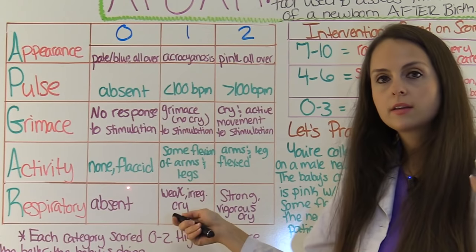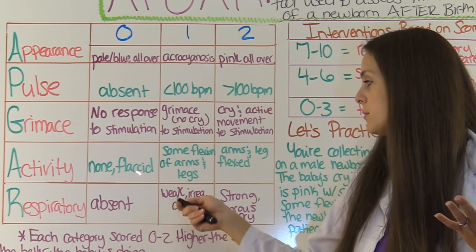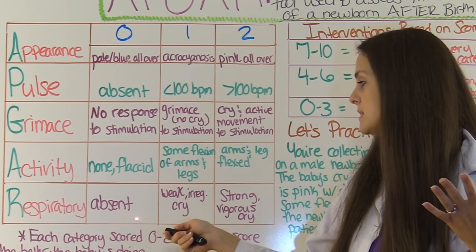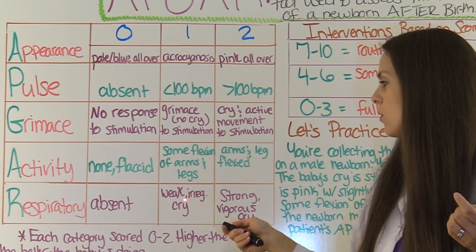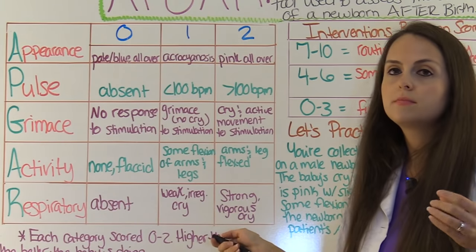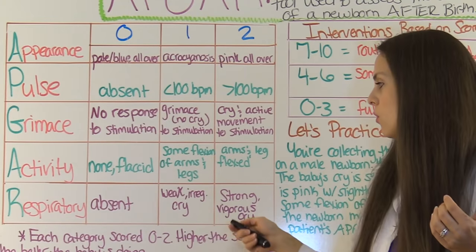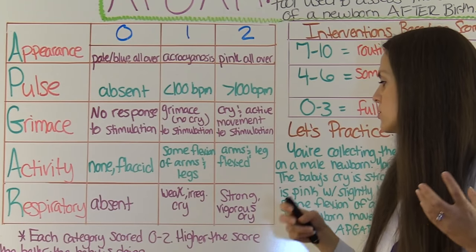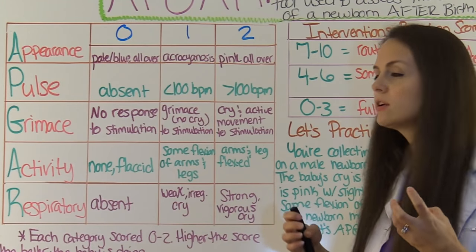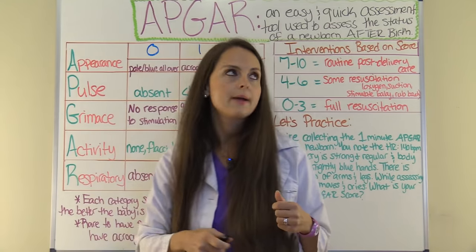R is for respiratory effort. You give a zero if respiratory effort is absent, a one if the newborn has a weak or irregular cry, and a two if the newborn has a strong, regular, vigorous cry.